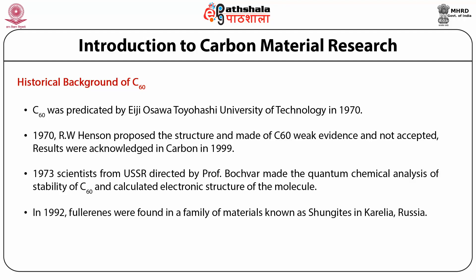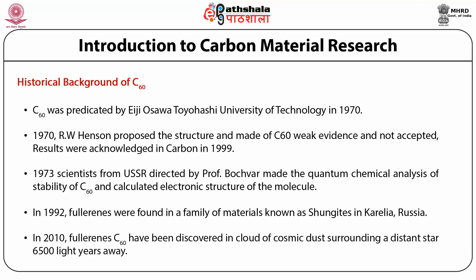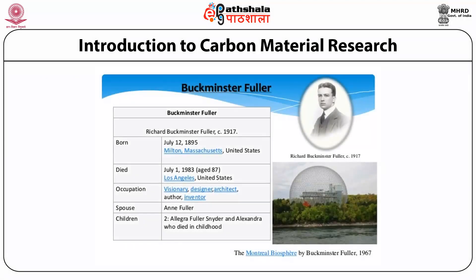In 1992, fullerene was found in a family of material known as shungite in Russia. In 2010, fullerene was discovered in a cloud of cosmic dust surrounding a distant star 6,000 light years away. The molecule C60 is called fullerene, named after the scientist Buckminster Fuller, an architect who designed this molecular structure. He was born in 1895 in the United States and died in 1983 at the age of 87.